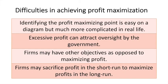Classical economics suggests that firms are traditionally profit maximizers. In reality there are some challenges and difficulties with that view. First, it is easy to identify this point in a simple diagram but much more complicated for firms to accurately measure their marginal revenue and marginal costs. They may try to get close to this point but it is difficult to be precise.